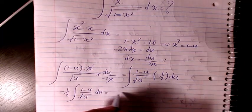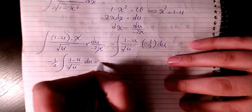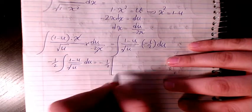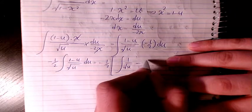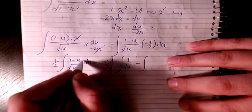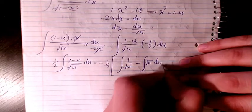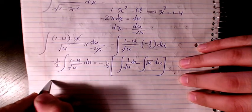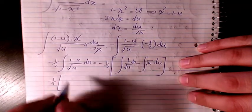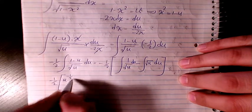So I will write negative 1 over 2, then I have 1 minus u over square root of u du. Then I factor it — I can separate it into two parts: 1 over square root of u minus u divided by square root of u, which is u to the power of negative 1 over 2 du.